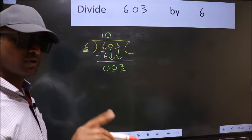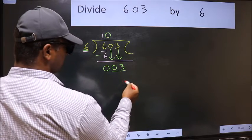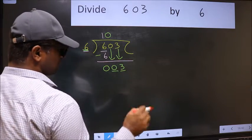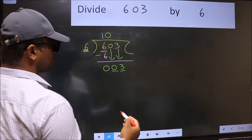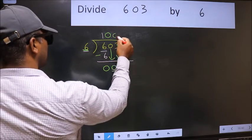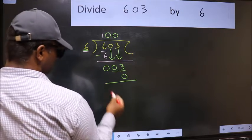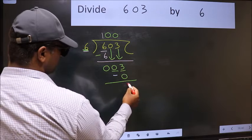Instead, what you should think of doing is, which number should we take here? If I take 1, we will get 6. But 6 is larger than 3. So what we should do is, we should take 0. So 6 into 0, 0. Now we should subtract. 3 minus 0, 3.